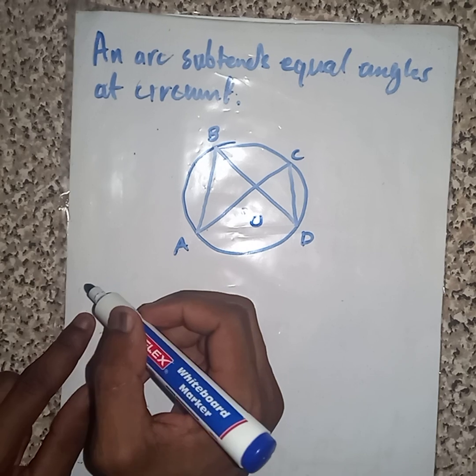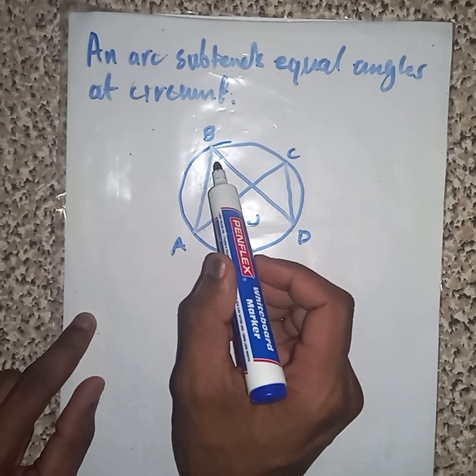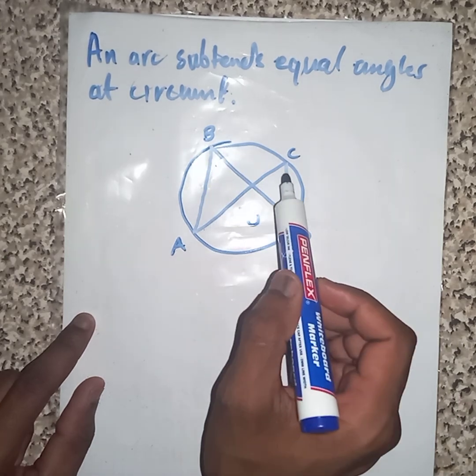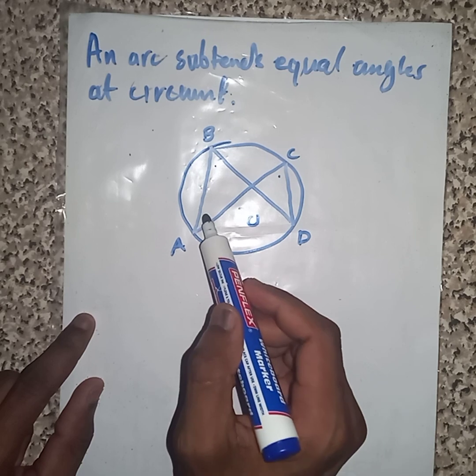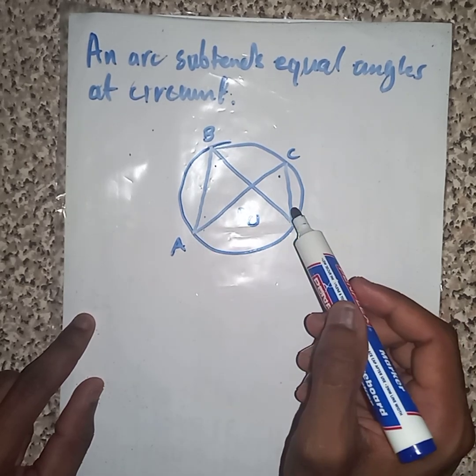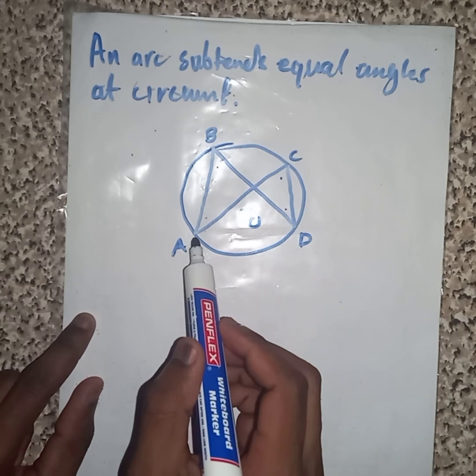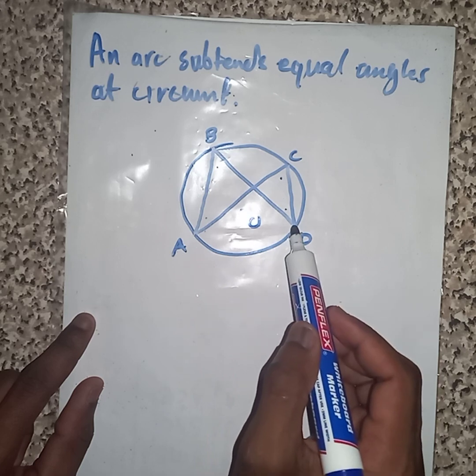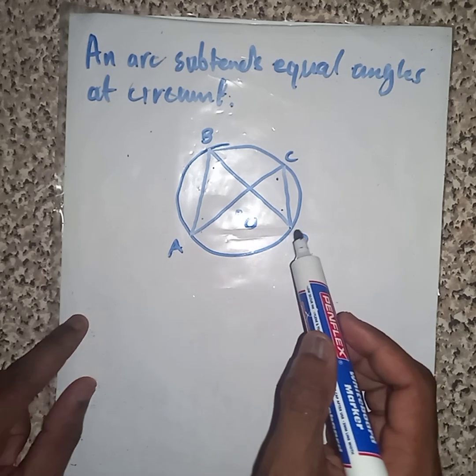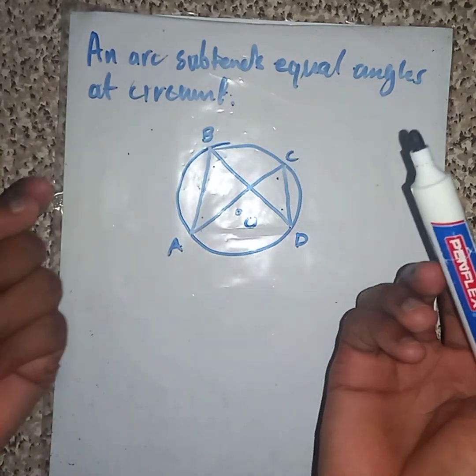Then we must prove somehow that B and C are equal, or A together with D are equal. You see, we have arc A till D. They subtend B and C, and those angles should be equal.